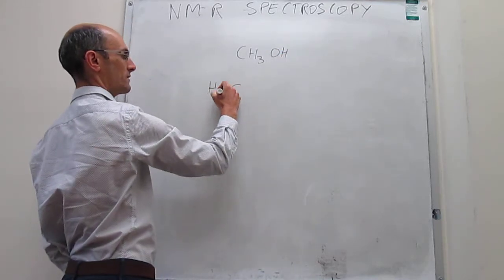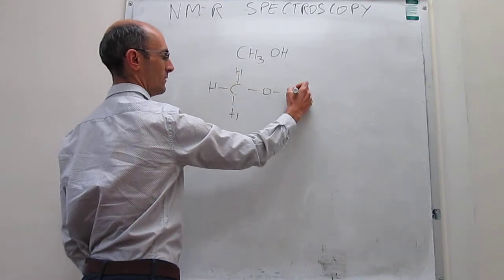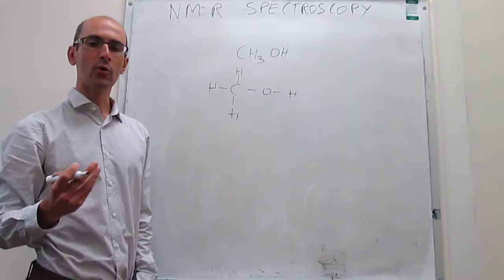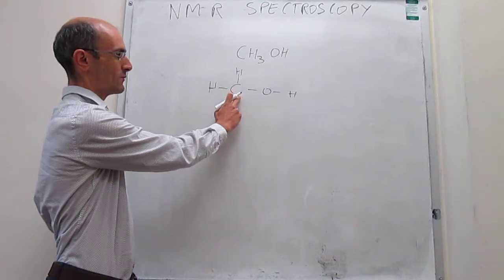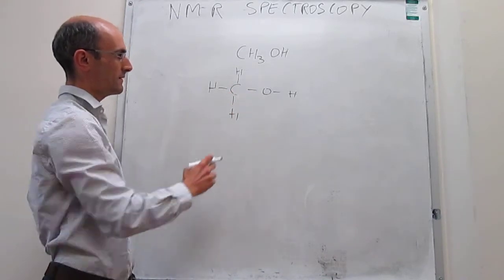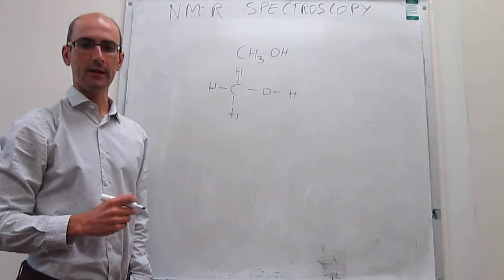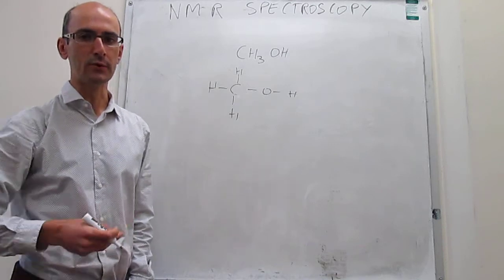It usually is convenient to draw the skeletal version of the molecule to figure out what the NMR spectrum should look like. We're looking at only the proton NMR spectrum. We assume that this is carbon-12 that is not NMR active, so only the protons here will be NMR active. And then we examine the electronic environments of the various protons in that molecule.